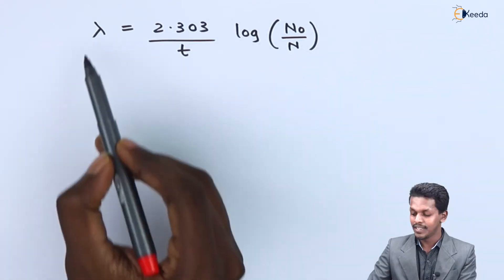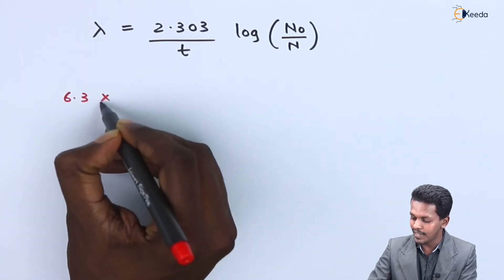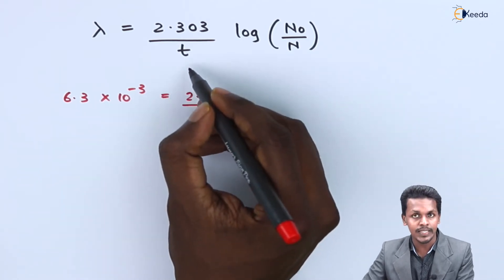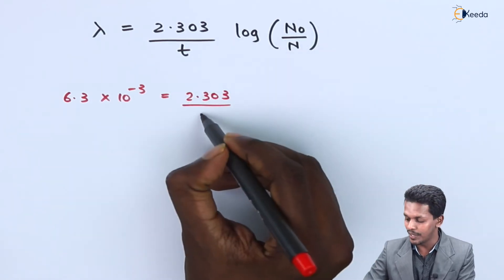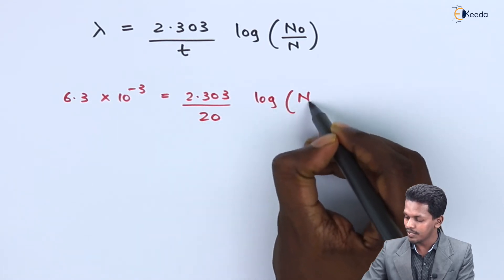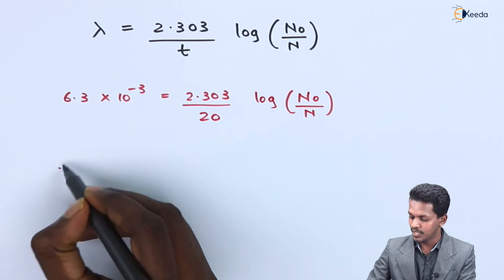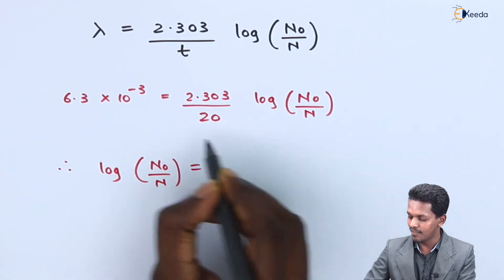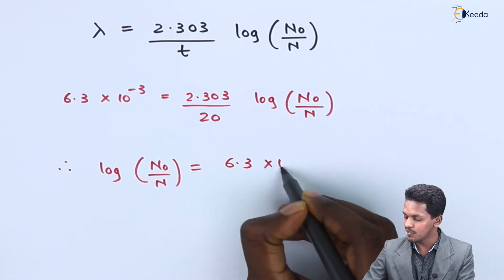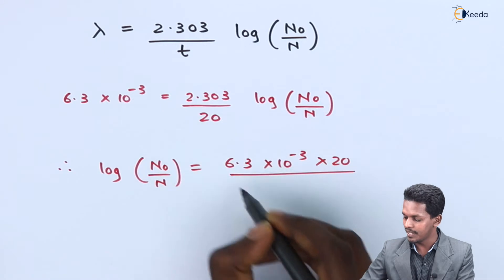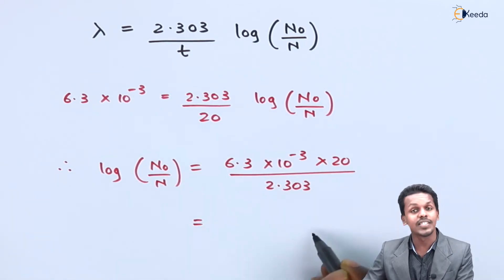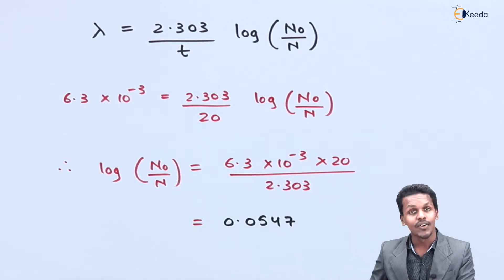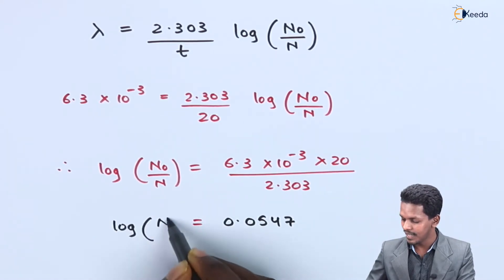Substituting: 6.3 × 10⁻³ = (2.303 / 20) × log₁₀(N₀/N). Rearranging: log₁₀(N₀/N) = (6.3 × 10⁻³ × 20) / 2.303. Calculating this gives log₁₀(N₀/N) = 0.0547.